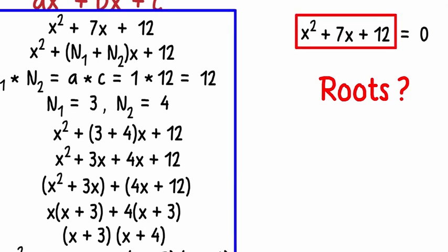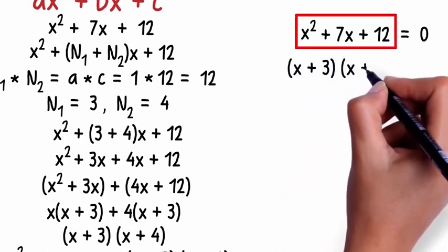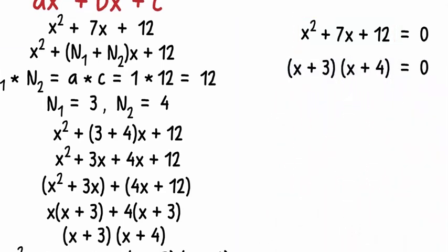We need to find its roots. By roots we mean the value or values of x which satisfy this equation. To find this solution or the roots, all we need to do is factorize the polynomial on the left. As we have already seen how it is factorized, we can write this as (x + 3)(x + 4) = 0.